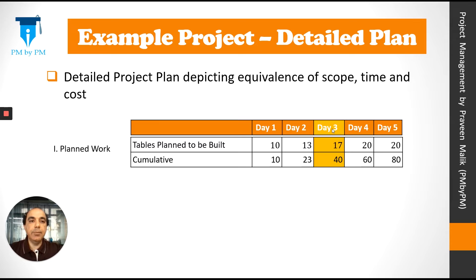This is the detailed plan of our example project. It depicts the equivalence between scope, time, and cost. Let's consider day 3 as our control date. On day 3, we had planned to build 17 tables on that day, and a total of 40 tables by the end of day 3.